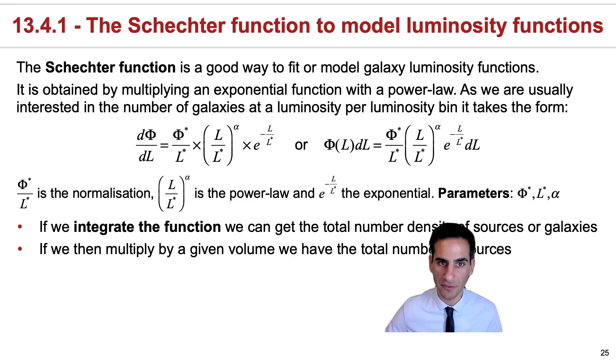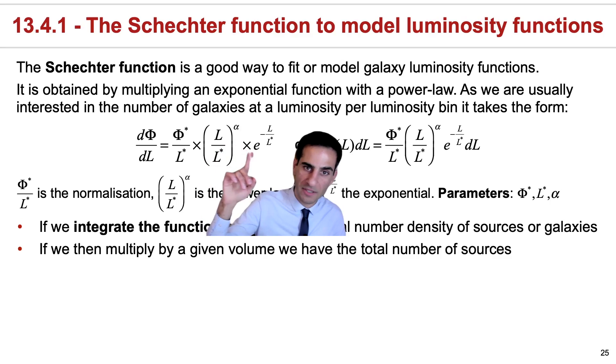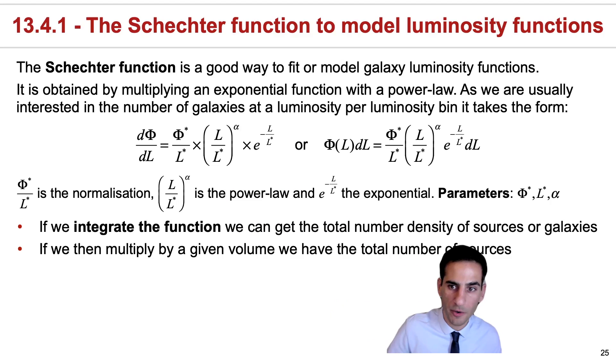Mathematically, a Schechter function is really a combination of a power law, essentially something that's affecting luminosity with the power of alpha times an exponential to describe the exponential decay of the counts as you go to high luminosities. In practice, this Schechter function was proposed and it is still an incredibly good way to fit or model galaxy luminosity functions.